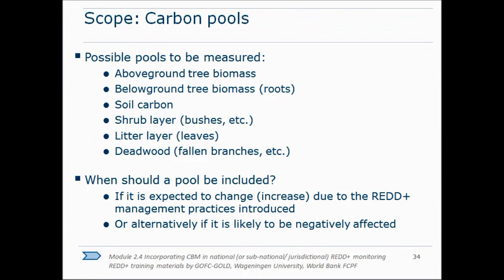Another question is which carbon pools to include. Above-ground tree biomass is by far the biggest pool in most humid tropical forests, though not in dry tropical forests such as Miambo forests or Selva Baja in Latin America, where there's often a great deal of soil carbon present too. Litter and deadwood layers are often less than 5% of total carbon — scarcely worth measuring given that there are measurement errors anyway.